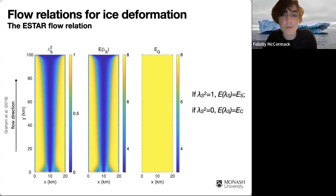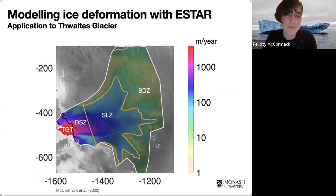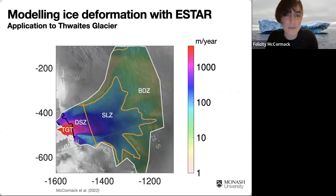The implication of this finding is that using E-star can bring about quite markedly different results of ice shelf evolution in realistic domains, and that's the subject of current investigation. We also expect this is going to have an impact on paleo simulations of ice shelf growth and decline. The next step was looking at how E-star performs over a realistic domain, so we applied it to Thwaites Glacier.